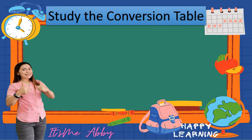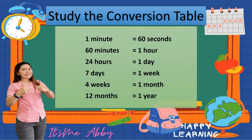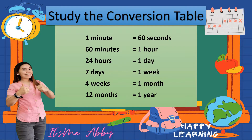I have here a conversion table we need to study, so we can be informed and aware of the time we are spending. 1 minute is equivalent to 60 seconds; 60 minutes is equivalent to 1 hour; 24 hours is equivalent to 1 day; 7 days is equivalent to 1 week; 4 weeks is equivalent to 1 month; and 12 months is equivalent to 1 year.